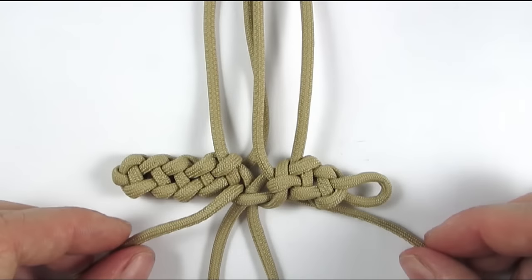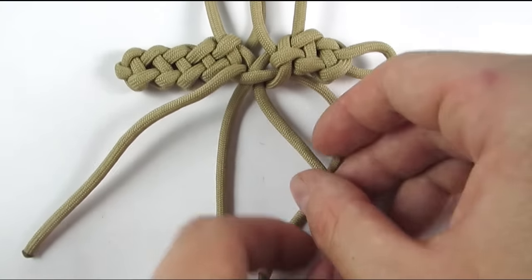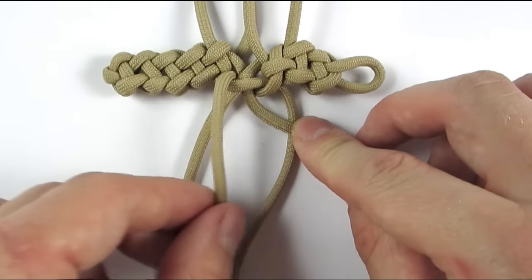So after tying the first cobra knot, we're now going to tie two vertical crown knots to make one of the sides.